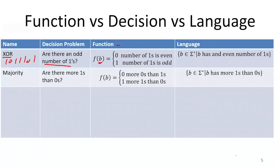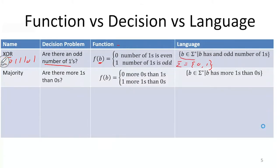Or we could think of this same thing as a language: it's the set of all strings from sigma star — where sigma equals {0, 1} — such that that string has an odd number of ones.